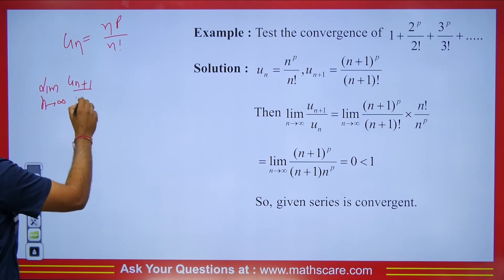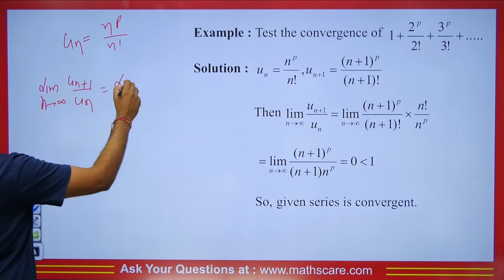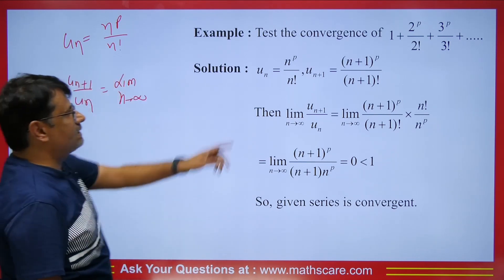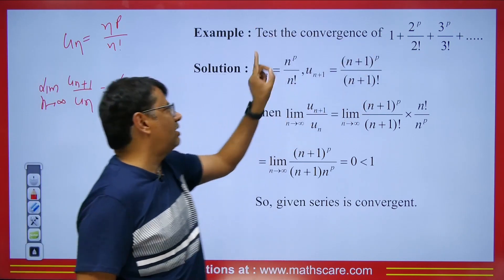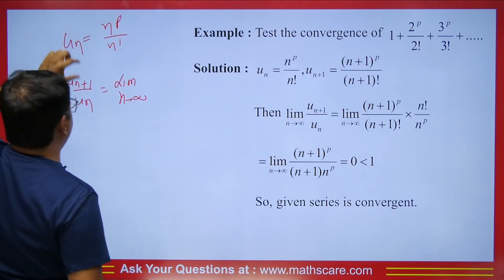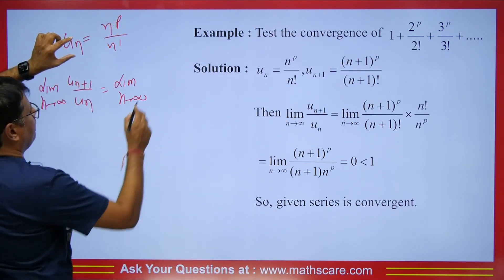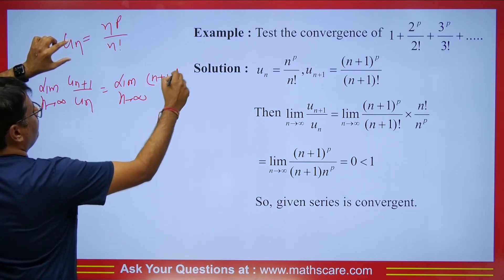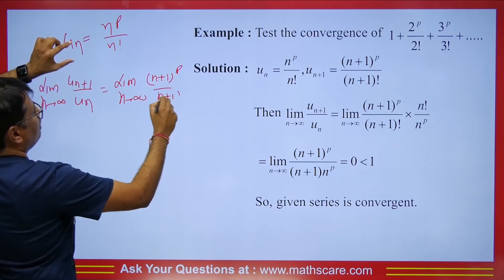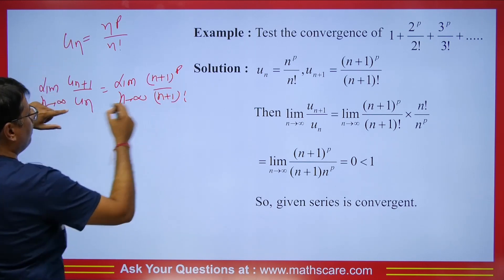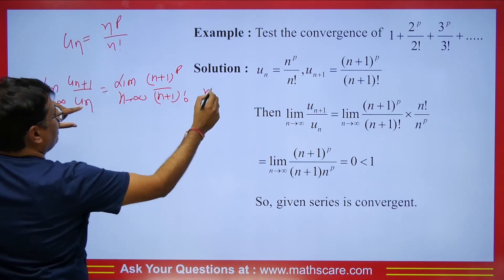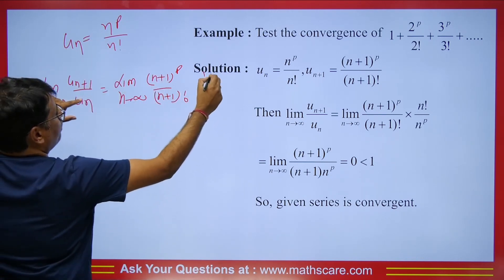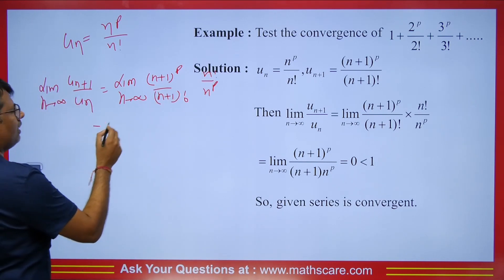We get limit n tends to infinity of u_{n+1} upon u_n. So u_{n+1} is obtained by replacing n with n+1: it becomes (n+1)^p upon (n+1)!. Below we place u_n, which is n^p upon n!. We write (n+1)! as (n+1) × n!, so the n! terms cancel out.